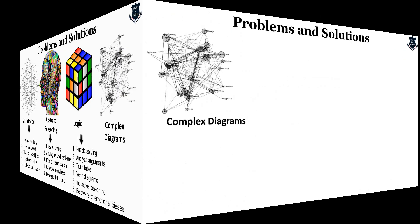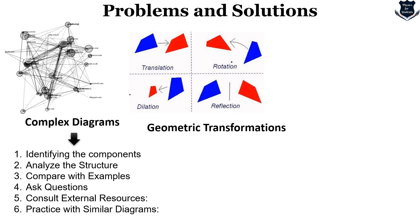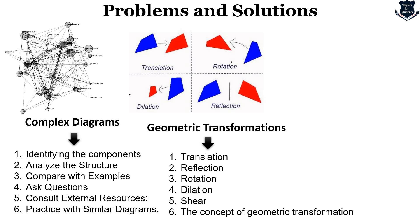Another challenge is complex diagrams. Identify the components of complex diagrams, analyze the structure, consult external sources, ask questions, and practice by comparing with simpler examples. These will be required in General Relativity. Next comes geometric transformations, which again reflects abstract thinking: how will an object behave when it is rotated, dilated, reflected — shear, etc. All this will be very beneficial for General Relativity. Draw, imagine, close your eyes, and extend your mental ability to understand geometric transformations.